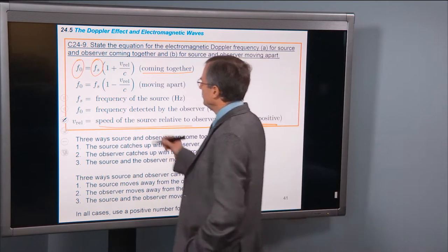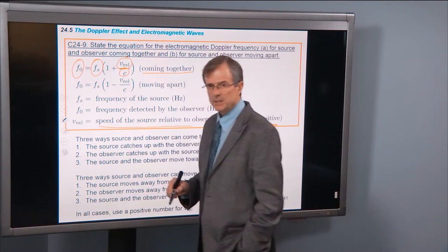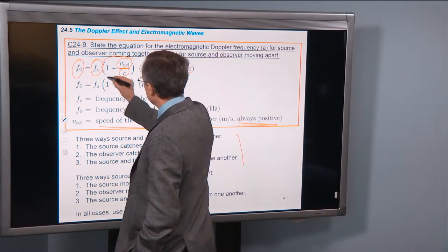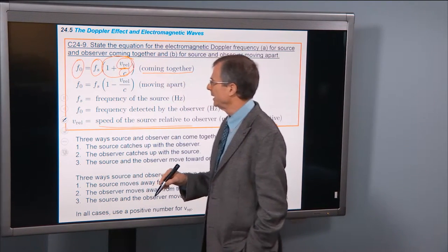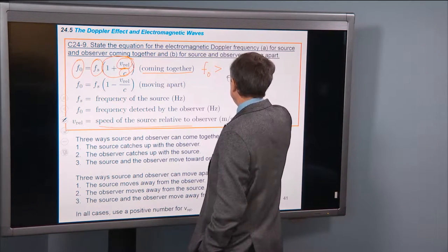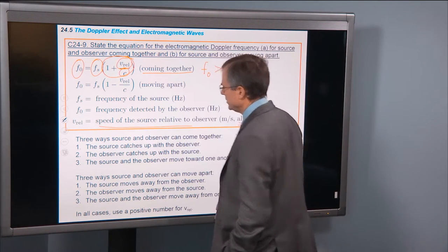You're going to put that positive number in here, divide it by c, the speed of light, 3 times 10 to the 8 meters per second. So you're going to end up with something that's bigger than 1, and the observed frequency is going to be greater than the frequency of the source.